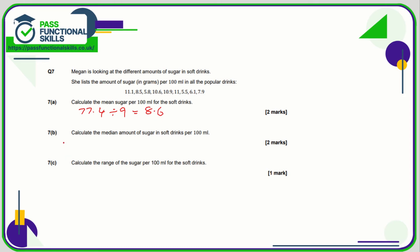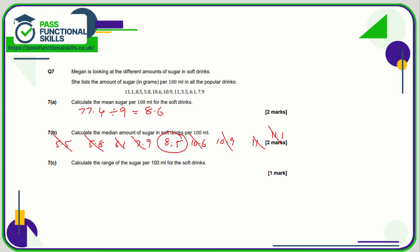The median is the middle value when put in ascending order: 5.5, 5.8, 6.1, 7.9, 8.5, 10.6, 10.9, 11, and 11.1. To find the median, chop one off each side and keep going. We can see that the median is therefore 8.5 grams. And the range is the greatest value minus the lowest: 11.1 minus 5.5, so the range is 5.6.